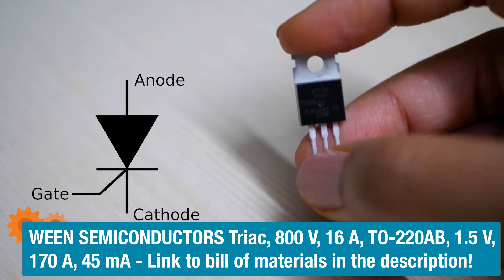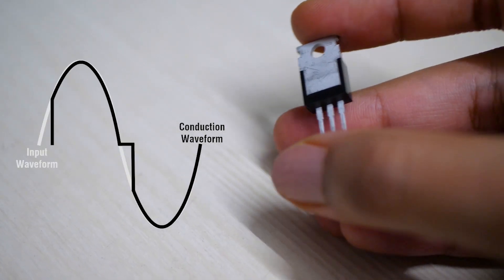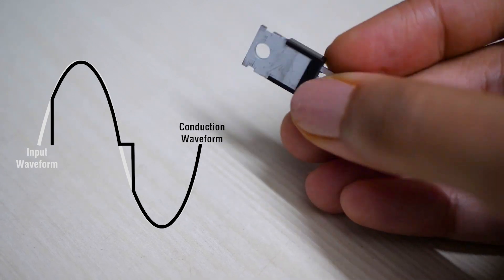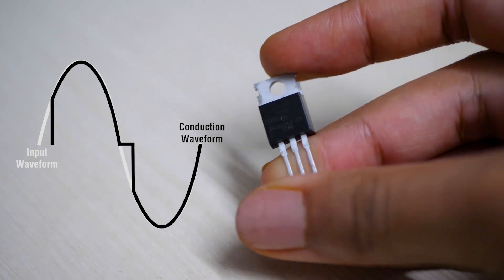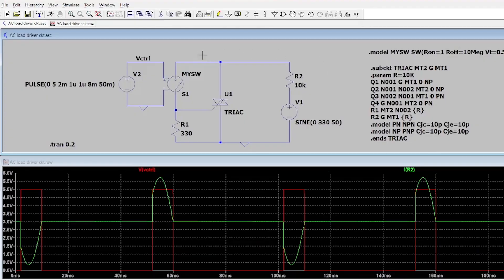With triac we can control the flow of AC current by turning it on and off at precise times. In a way we adjust how much power we deliver to the load by choosing which part of each cycle of the sine wave is used to power the load. Check this simple simulation to understand how triacs can switch supply to the load.